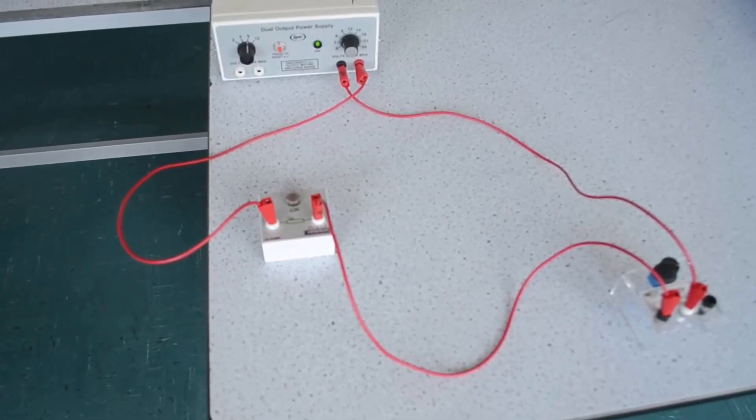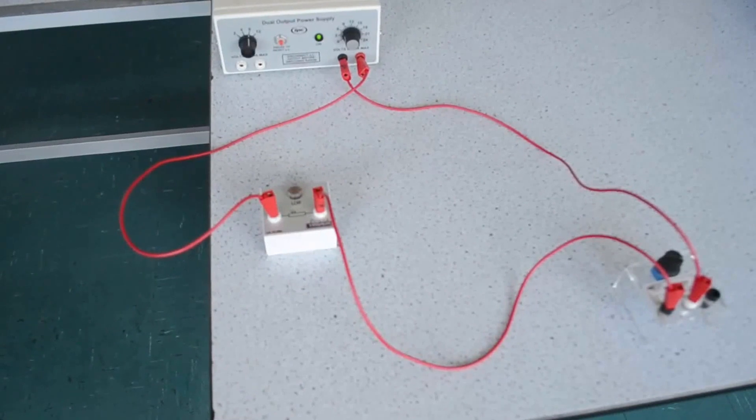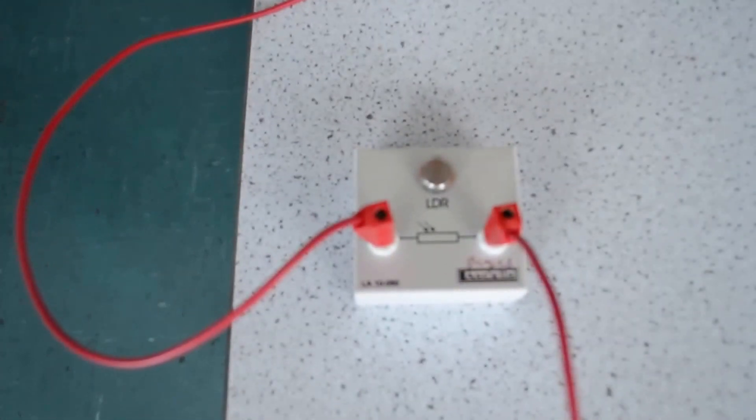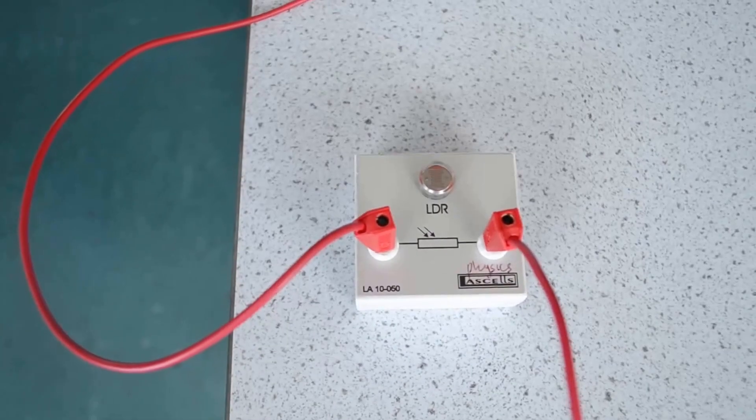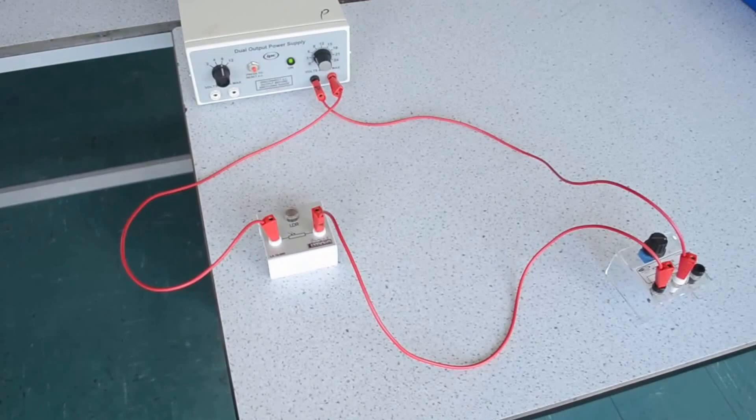Hello, in this video I'll be showing how you can use a potential divider circuit in order to use a non-ohmic device, such as, in this case, a light-dependent resistor, or a thermistor, as a sensor.